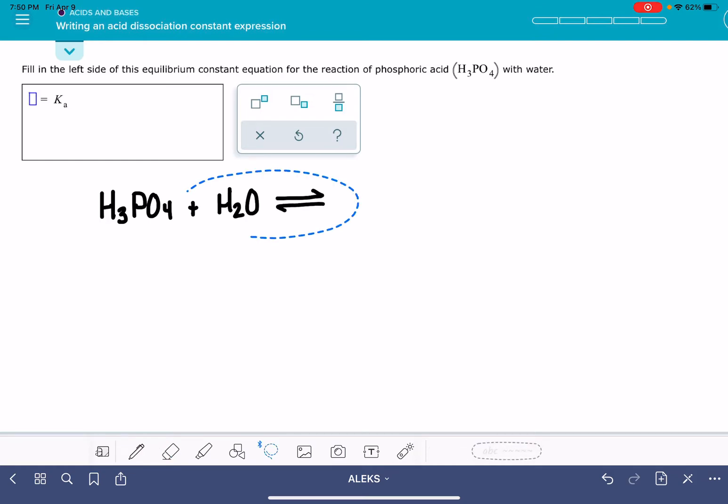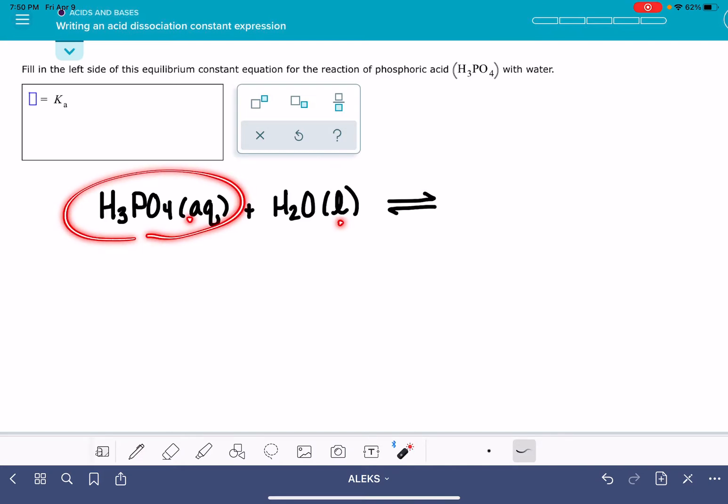Actually, you know what? We need to include states on this because that's important when we're writing the equilibrium expression. So the acids in these equations, the acids are always going to be aqueous. All of them. They will all be aqueous. And then water, of course, is going to be a liquid. So since this is an acid, that means that it is an H-plus donor.